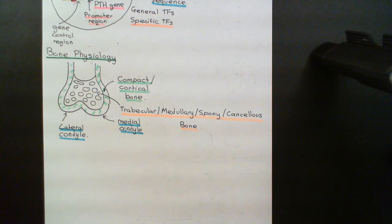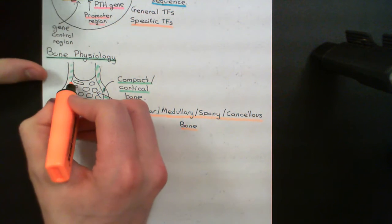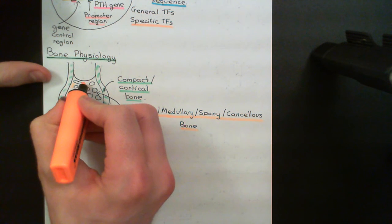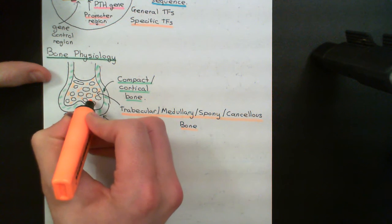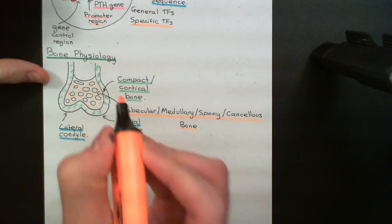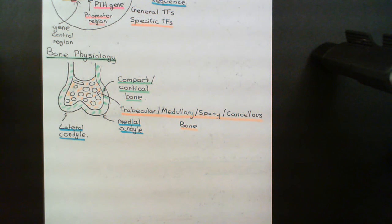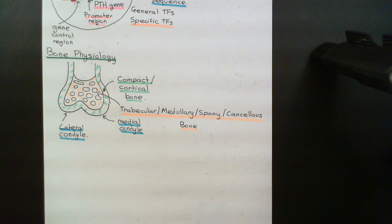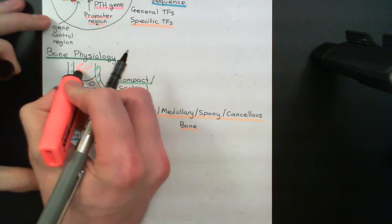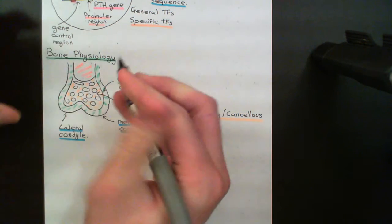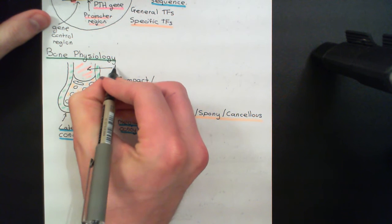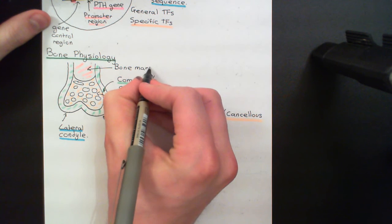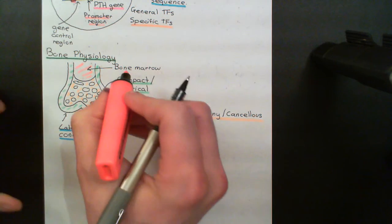The cancellous or trabecular bone can be coloured in, avoiding the holes since those are just spaces. There is also a cavity in the shaft of the femur — this is where the bone marrow will be. So that's the key distinction: trabecular bone in the middle versus compact or cortical bone on the outside, though their microscopic structure is identical — only the macroscopic appearance differs.